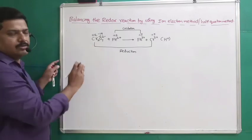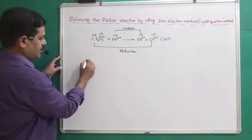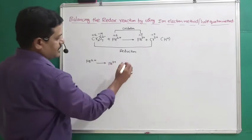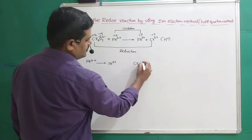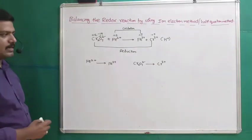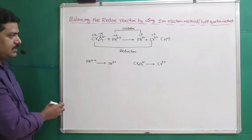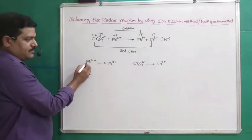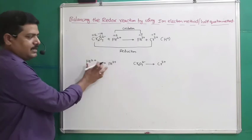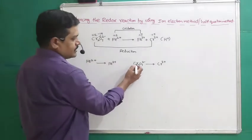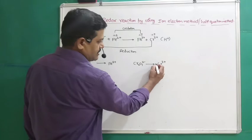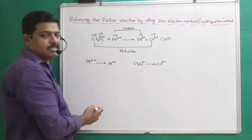Now we split the equation into two halves. The oxidation half-reaction: Fe²⁺ → Fe³⁺. The reduction half-reaction: Cr₂O₇²⁻ → Cr³⁺. We need to balance the atoms for which there is a change in oxidation state. For iron, 1 Fe atom on each side — already balanced. For chromium, 2 Cr atoms are present in Cr₂O₇²⁻ but only 1 Cr in Cr³⁺, so we place a coefficient of 2: Cr₂O₇²⁻ → 2Cr³⁺.